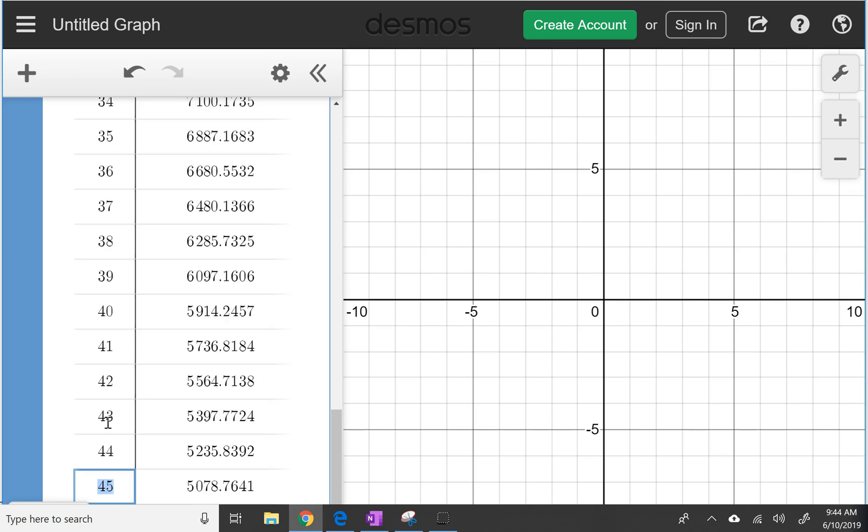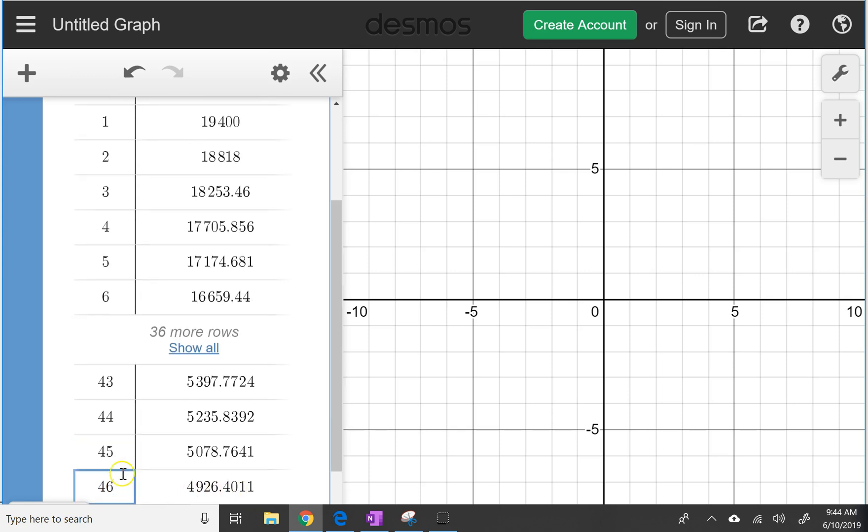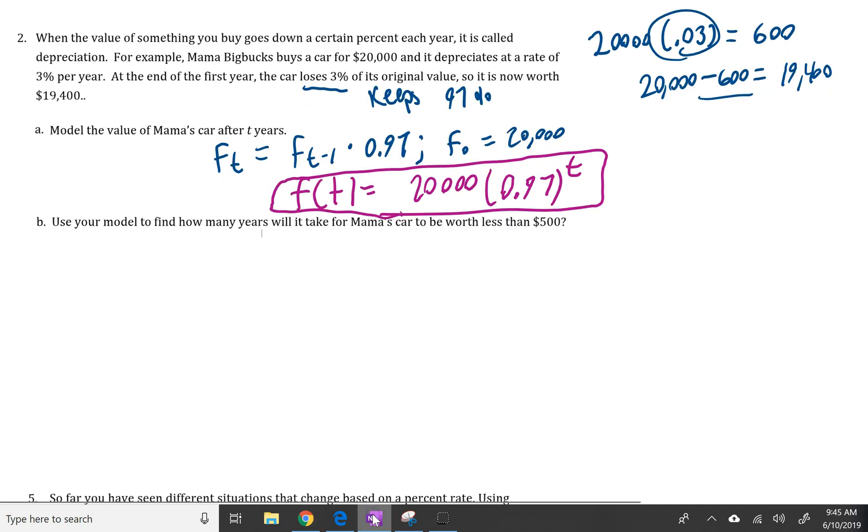And so you can see this is a nice efficient and easy method to use by making the technology table. You could do the same kind of thing in your calculator, but all different schools use different calculators, but everyone has access to Desmos, so that's why I've chosen to use Desmos. So it's going to be sometime between 45 and 46 years, so we'll say approximately 46 years to answer that question.